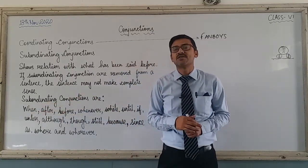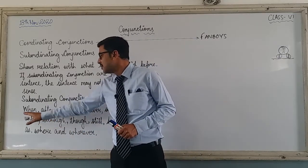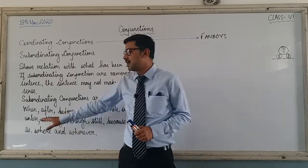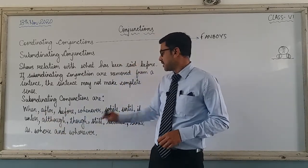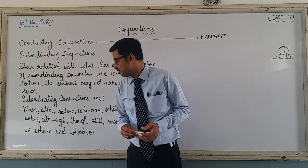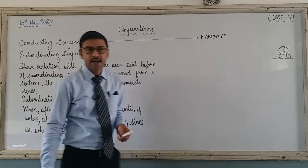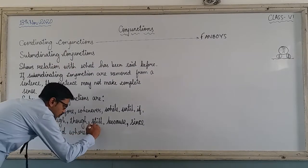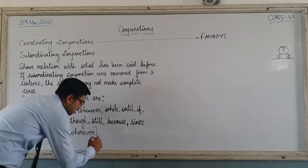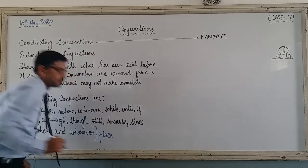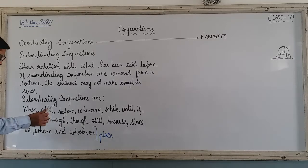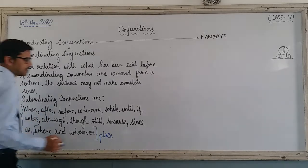Examples of subordinating conjunctions are: when, after, before, whenever, while, until, if, unless, although, though, still, because, since, as, where, and wherever. Note that 'where' and 'wherever' are subordinating conjunctions that talk about place. All of these words are examples of subordinating conjunctions.